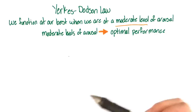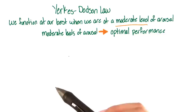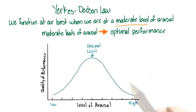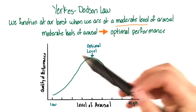Think back to our lesson on consciousness, where we talked about our levels of awareness. At one side of the continuum we were unconscious, so in a coma, and we had zero awareness. And at the other end of the continuum, we were fully awake and aware. The idea here is somewhat similar, except instead of having awareness on a continuum, we have our level of arousal on a continuum.